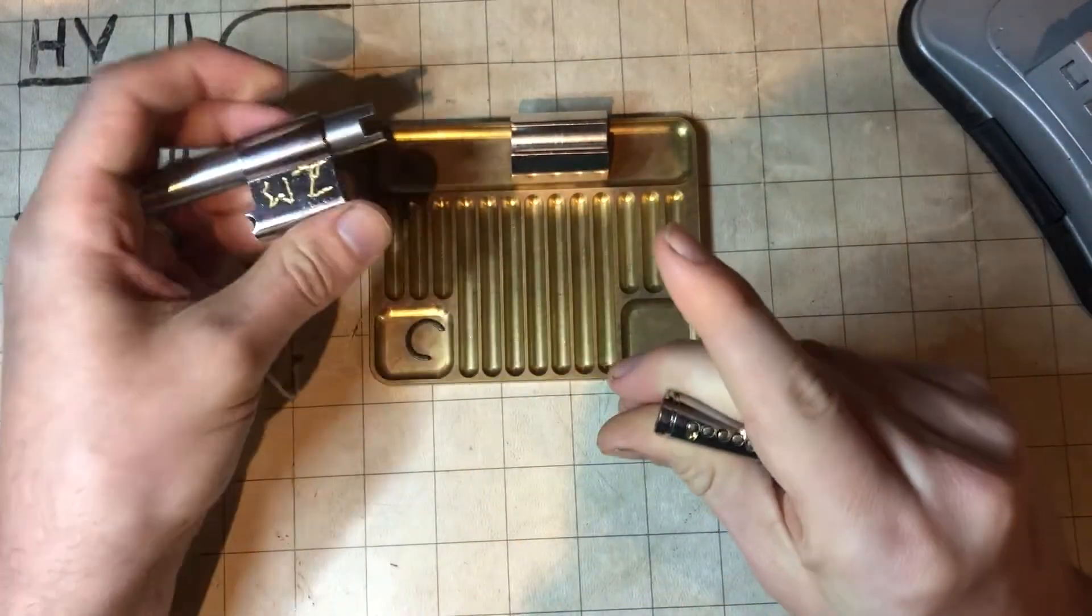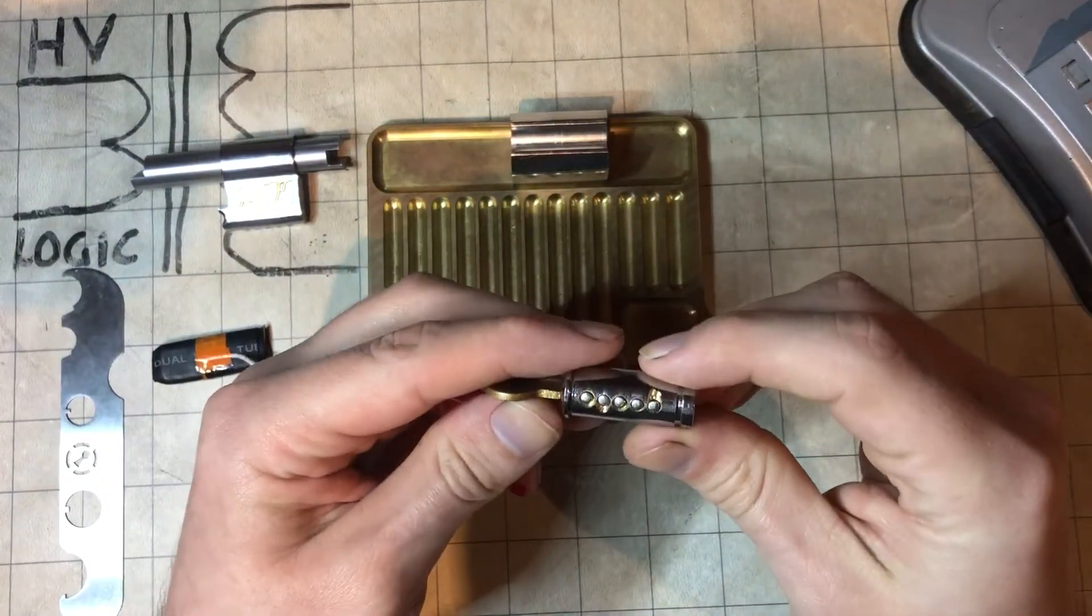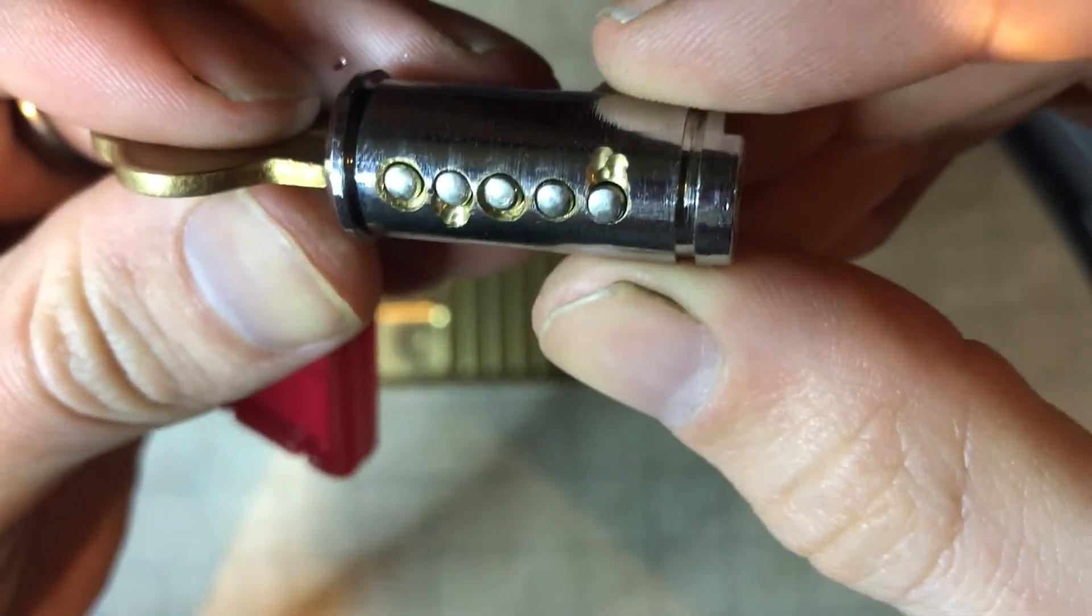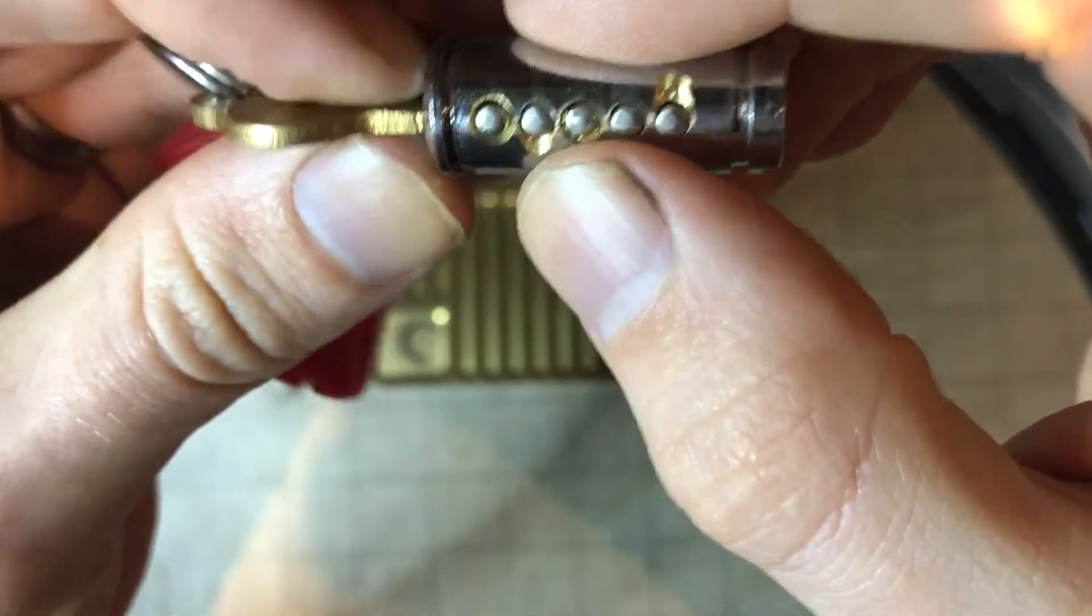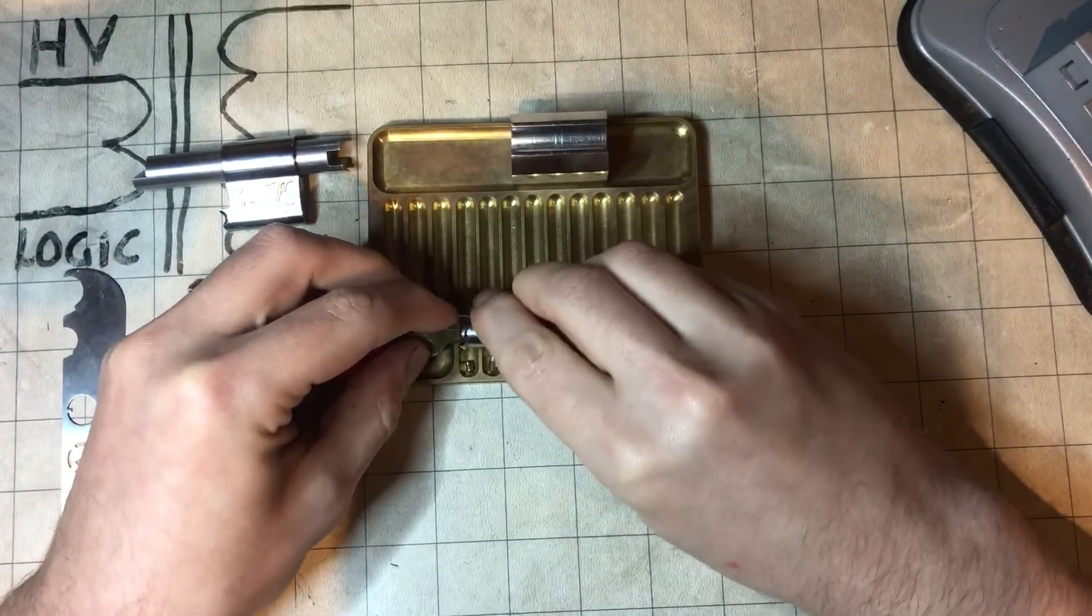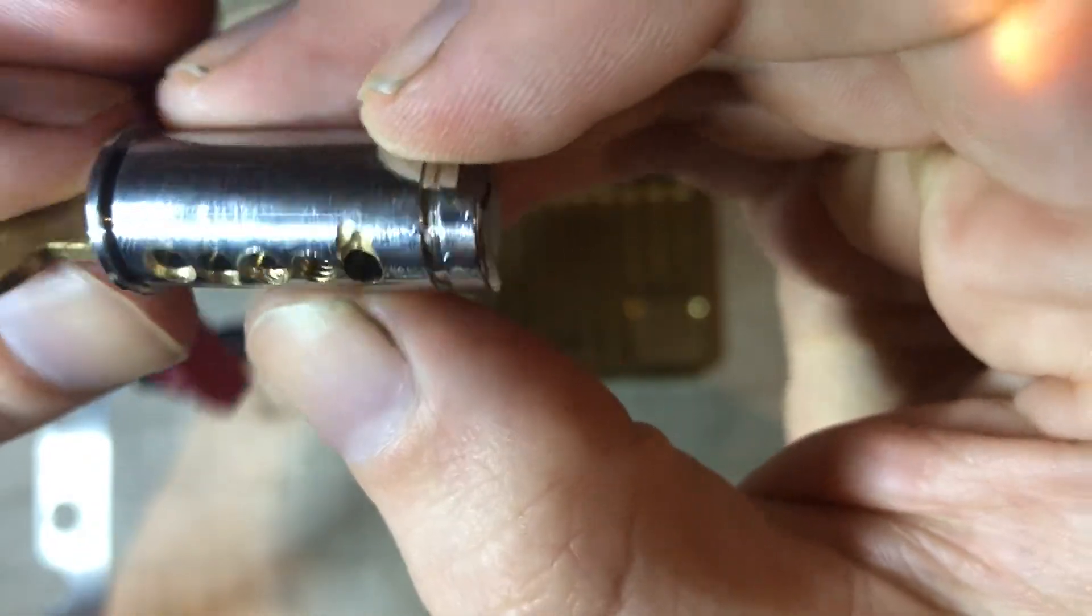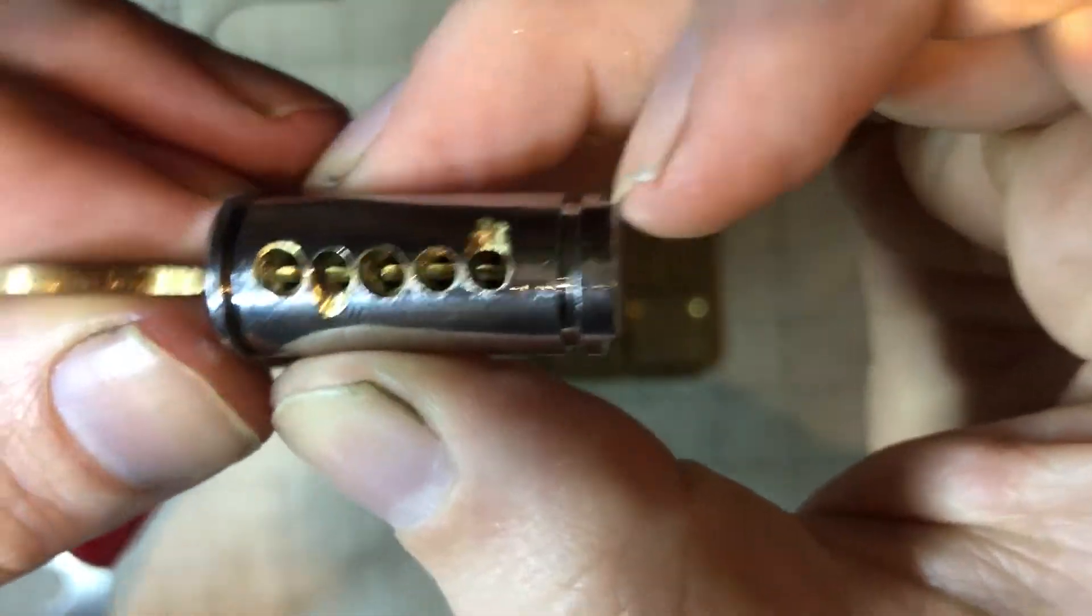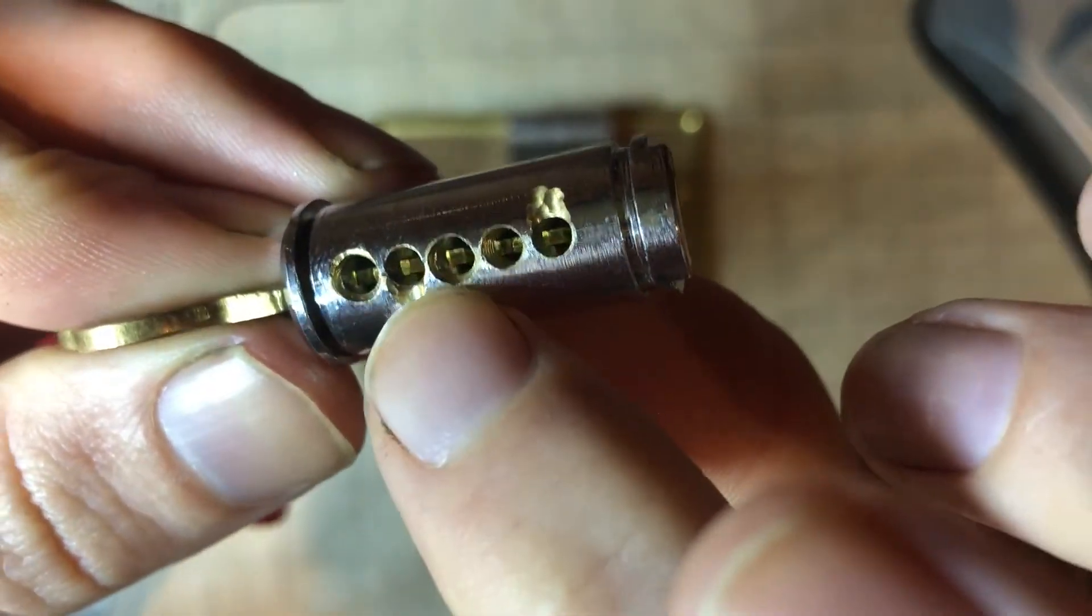Alright. Yeah. Interesting. So we've definitely got some core mods here. One, two, three, four, five. So it looks like, yeah, we've got some over milling on one and three.